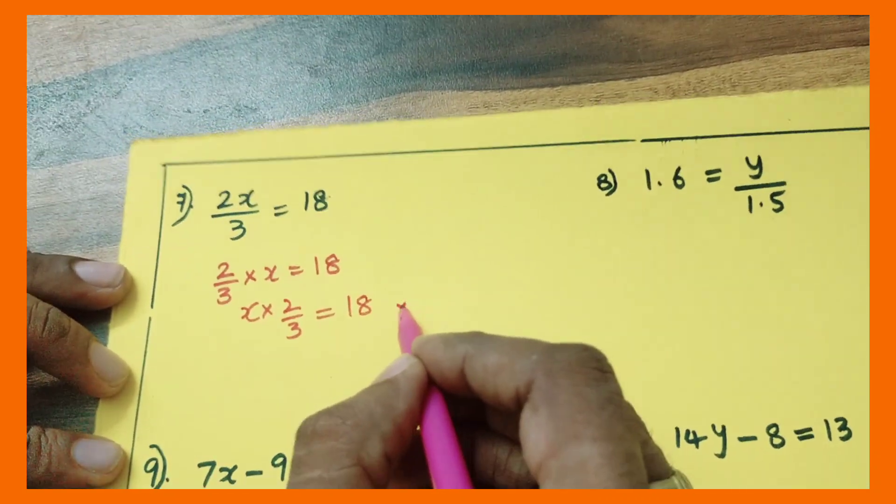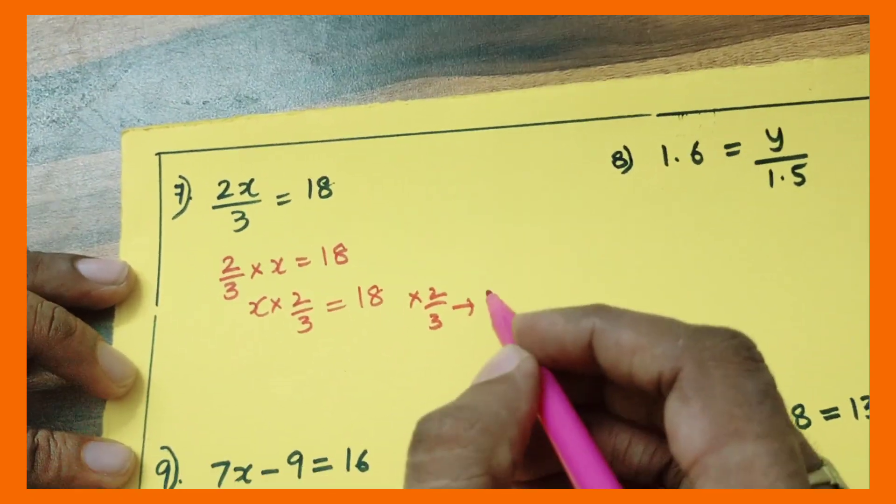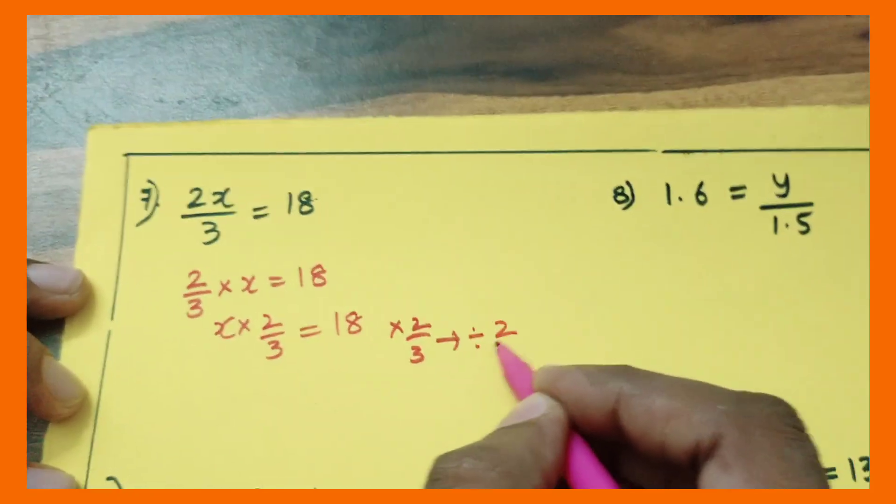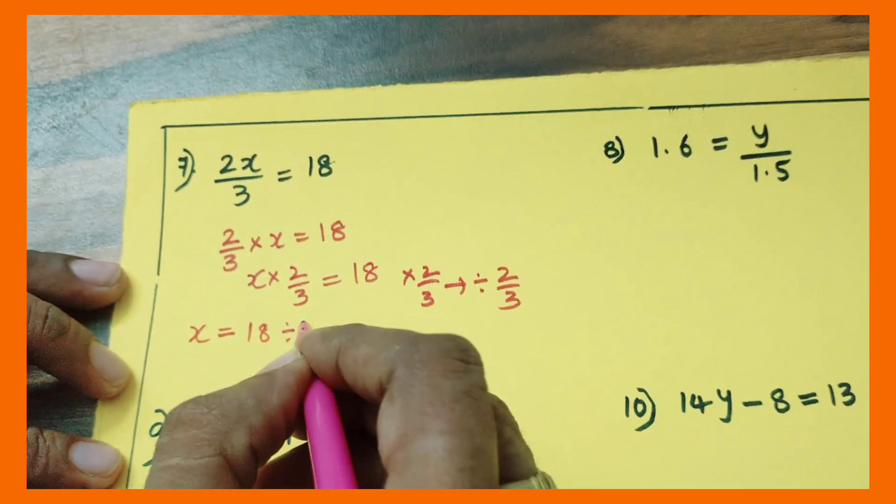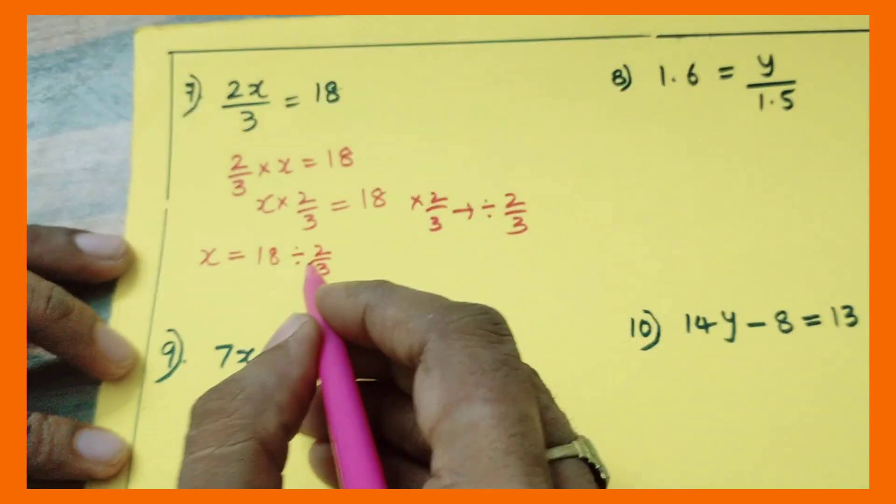So into 2 by 3 will become, if you transpose this to the RHS, it is going to become divided by 2 by 3. So x is equal to 18 divided by 2 by 3.